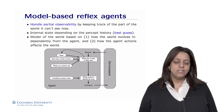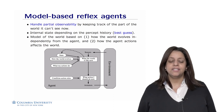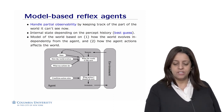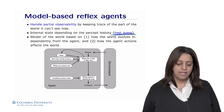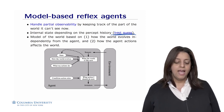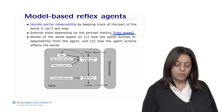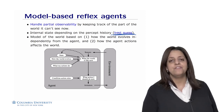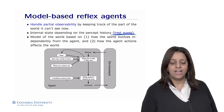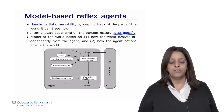Model-based reflex agents handle partial observability by keeping track of the part of the world they can't currently see. They maintain an internal state that depends on the percept history — usually a best guess of what's going on. The model is built based on two things: how the world evolves independently of the agent, and how the agent's actions affect the world. There are still condition-action rules, but the agent maintains a model of the world based on percept history.